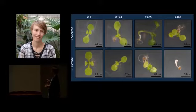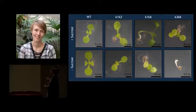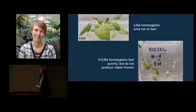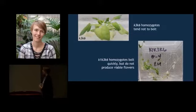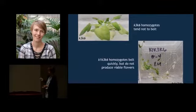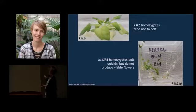However, with sucrose supplementation, the K1K6 looks about the same as wild-type, and the K3K6 is actually able to grow. Additionally, K3K6 and the triple mutant K1K3K6 are not able to reproduce. The K3K6 mutant just sits around and doesn't bolt — this one is 112 days old in this picture. The triple mutant bolts quickly but does not produce viable flowers; they just turn white and dry out.